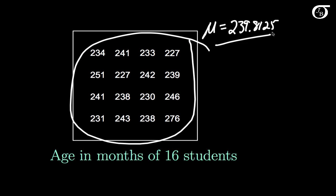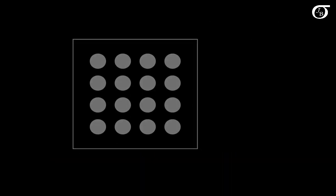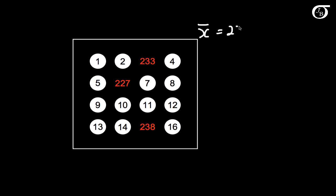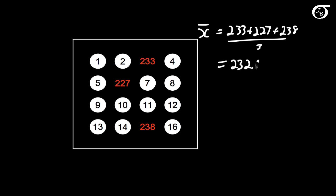But that is an unknown value to the professor. To the professor, there are 16 students with unknown ages. The professor is allowed to draw a random sample of size 3. The red dots represent our randomly selected students, and we can find out their ages in months. We get ages of 233, 227, and 238. We can calculate the sample mean of those three values by adding them up and dividing by 3, and we get a sample mean of 232.67 rounded to two decimal places.